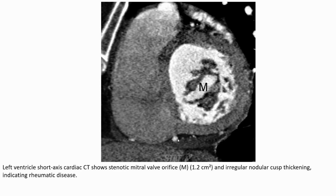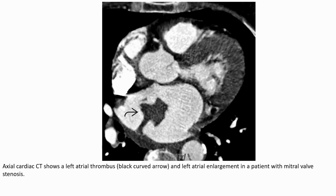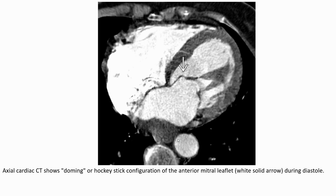This CT-A may show a stenotic mitral valve orifice with an area of around 1.5 cm². Irregular nodular calcific thickening is noted indicating rheumatic changes. This CT-A may also show a left atrial thrombus indicated by the black curved arrow, and left atrial enlargement in the patient with mitral valve stenosis. CT-A may also show doming or hockey stick configuration of the anterior mitral valve leaflet during diastole.